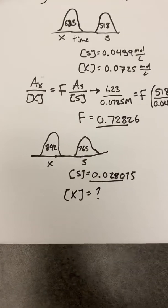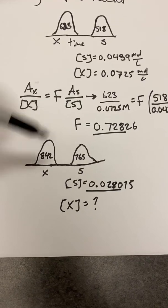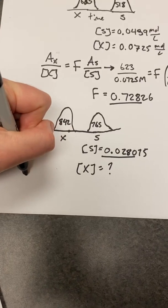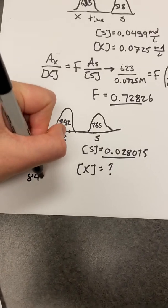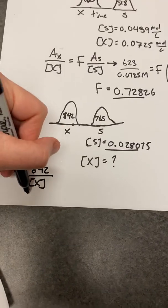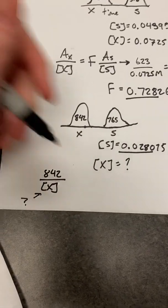And you want to find X. Well, the beautiful thing is you already know the response factor, which we determined in the previous problem. And so it's going to be a matter of plugging and chugging. Our area of X we know is 842. We're going to see if we can determine the concentration of our analyte. It's unknown.